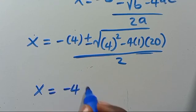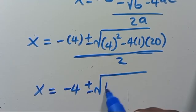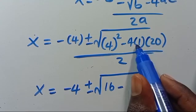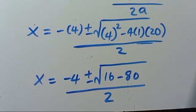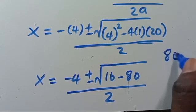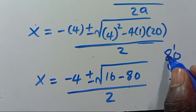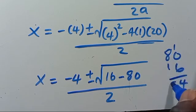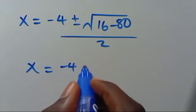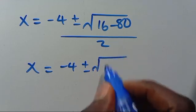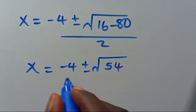From here we have X equals minus 4, positive or negative, square root of — 4 to the power of 2 is 16, minus 4 times 1 times 20 is 80 — over 2. So we have 80 minus 16, which gives us 64. Therefore X equals minus 4, positive or negative, square root of 64, over 2.